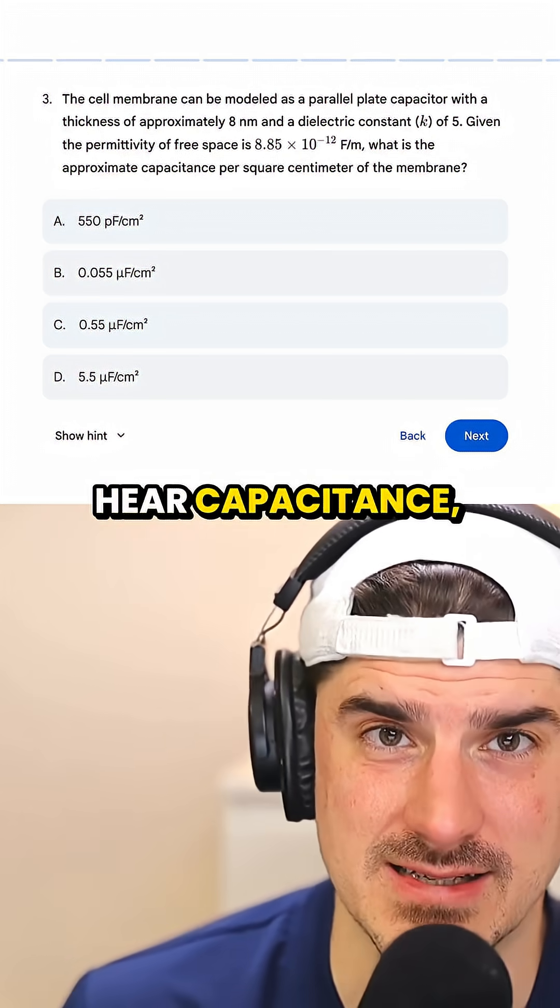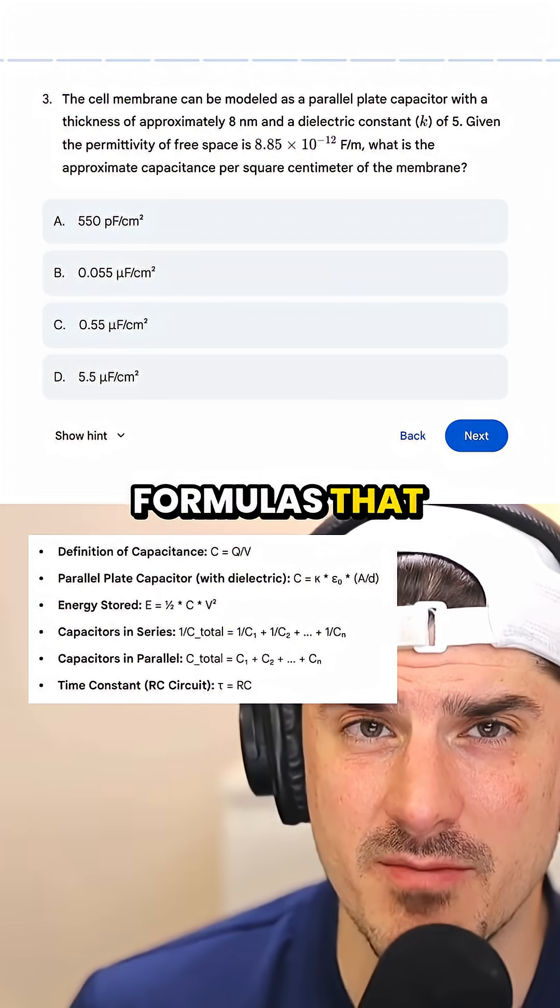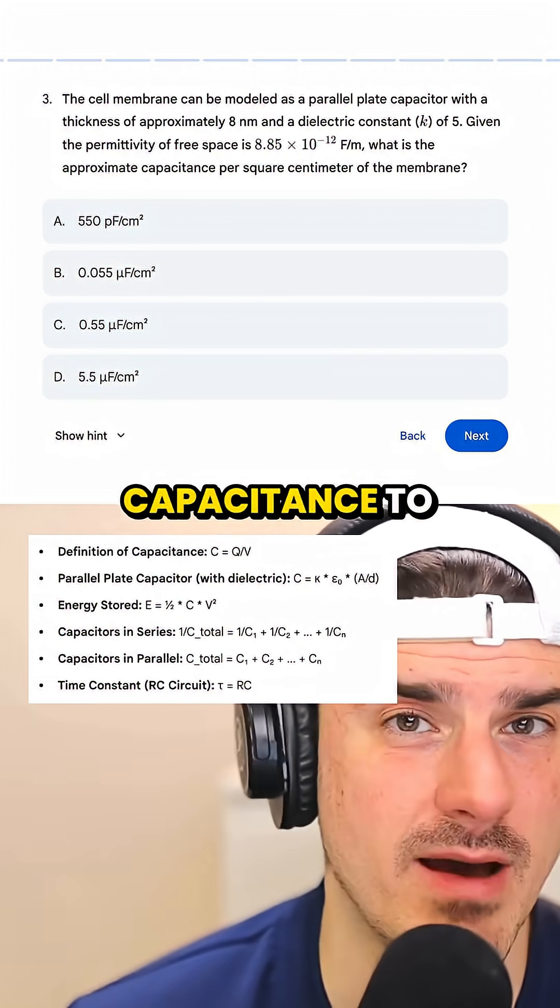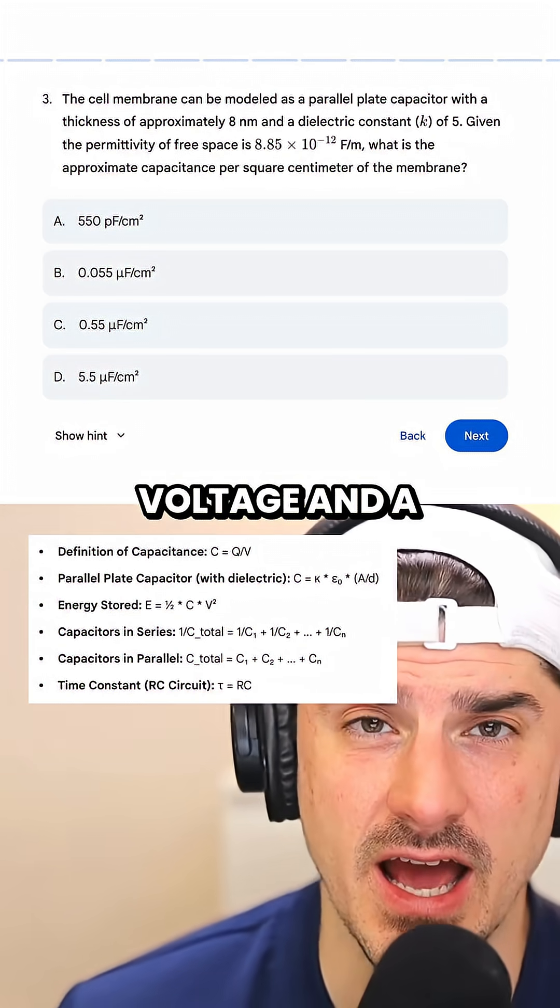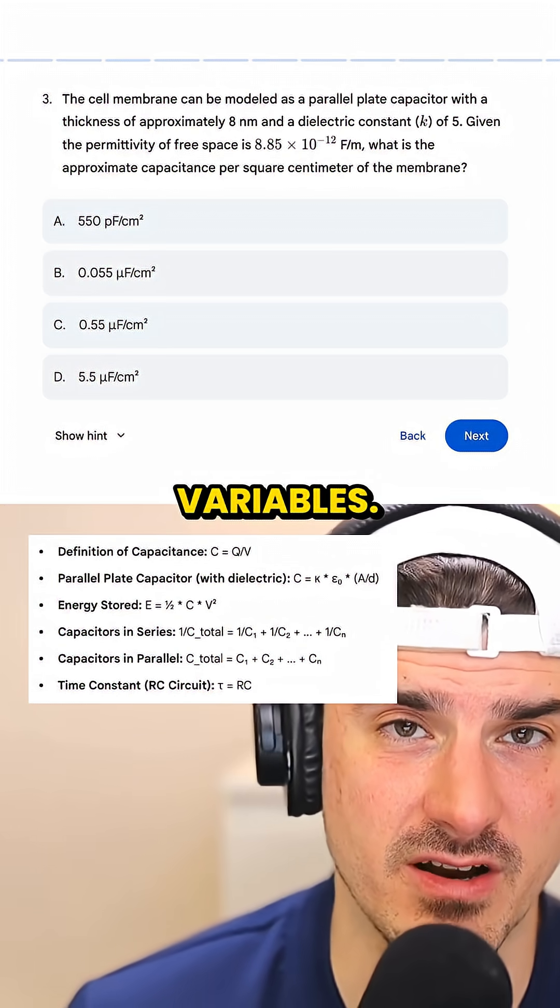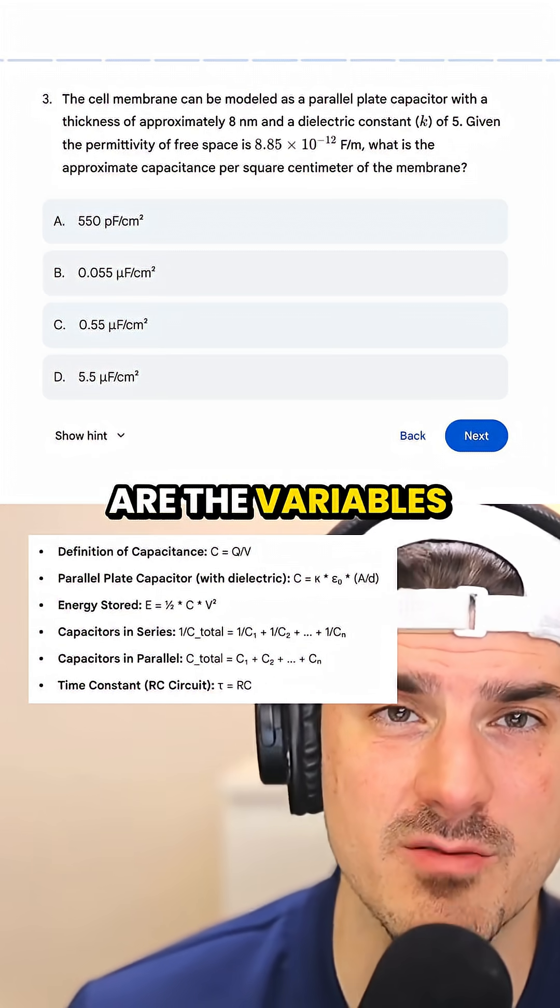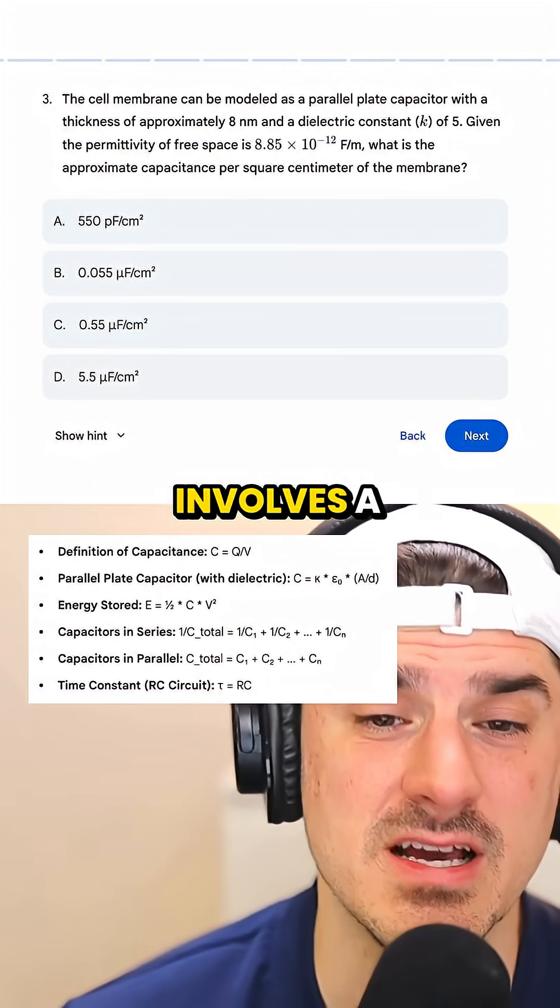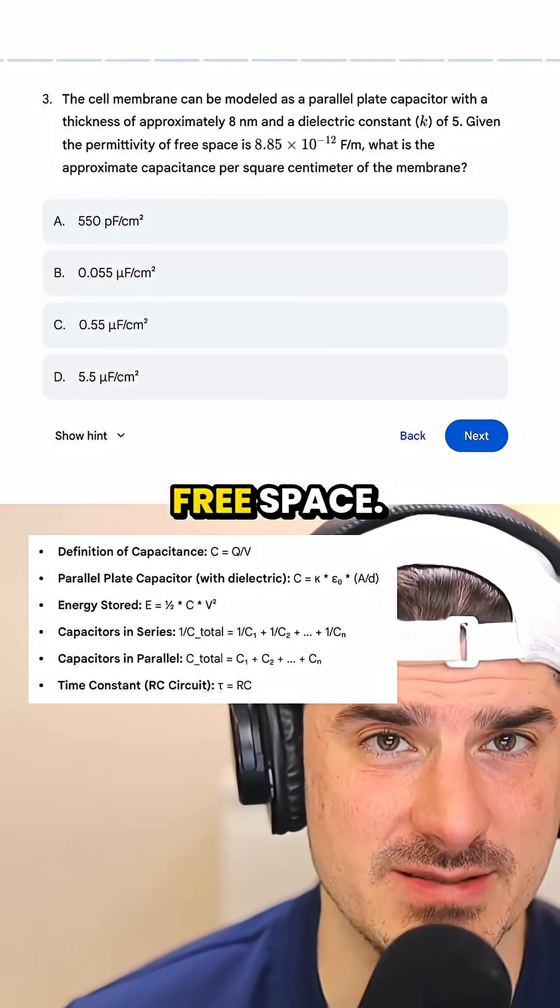when you hear capacitance, there are a few things you might be thinking of because there are a number of different formulas that people memorize that represent the equations relating capacitance to things like charge and voltage and a number of other variables. In this case, the variables that guide us to the correct answer are the variables that they give us in the stem. Namely, they told us this one involves a dielectric constant, which is 5, and a permittivity of free space.